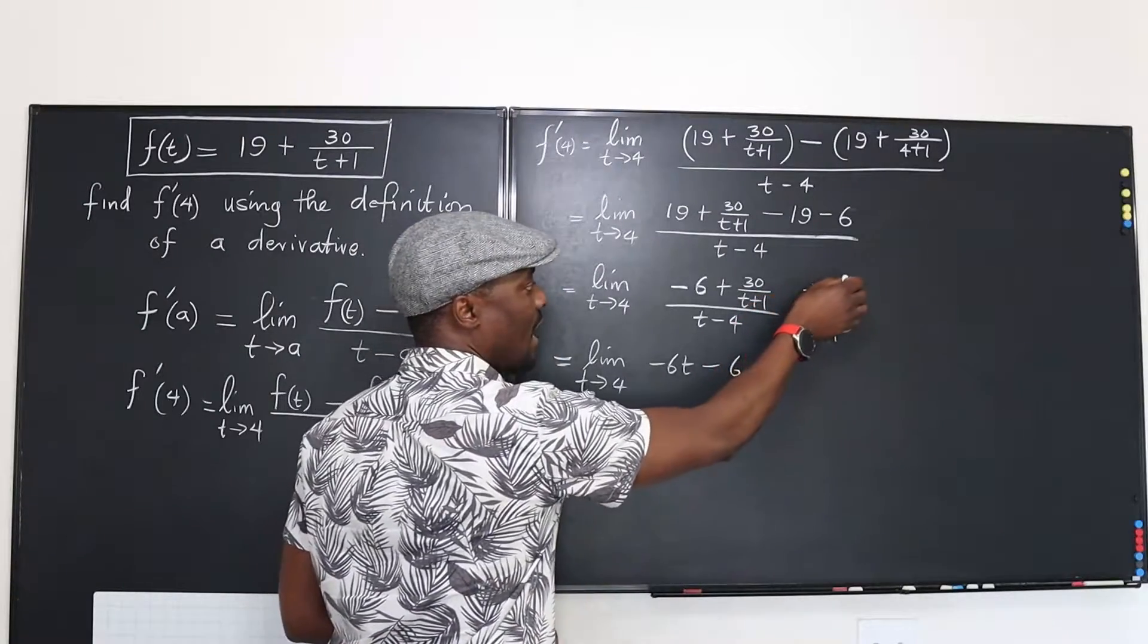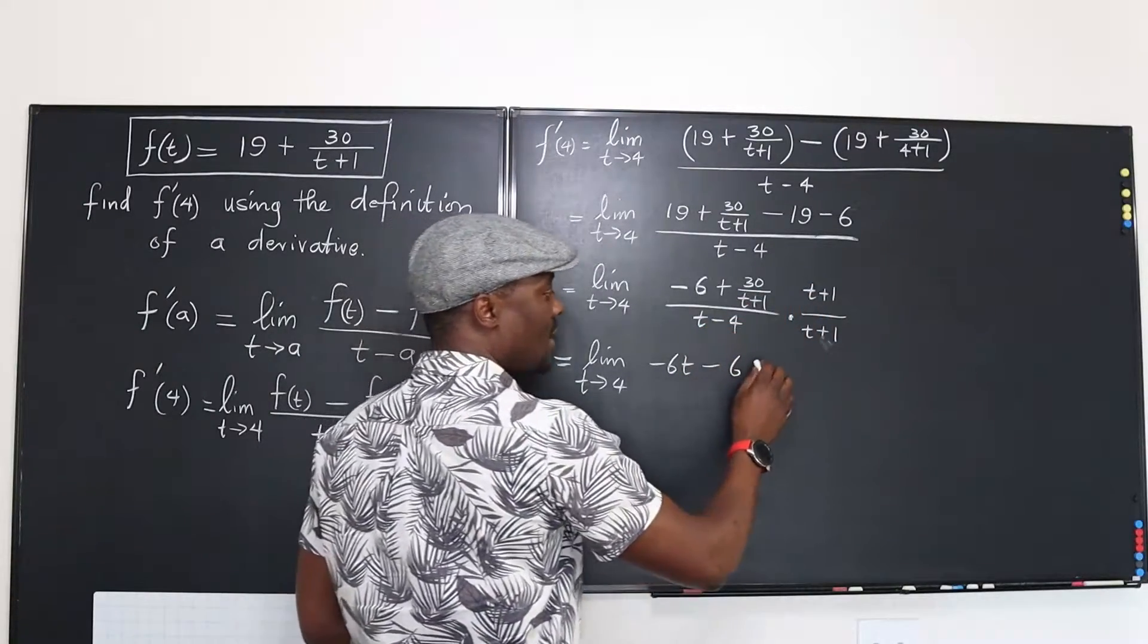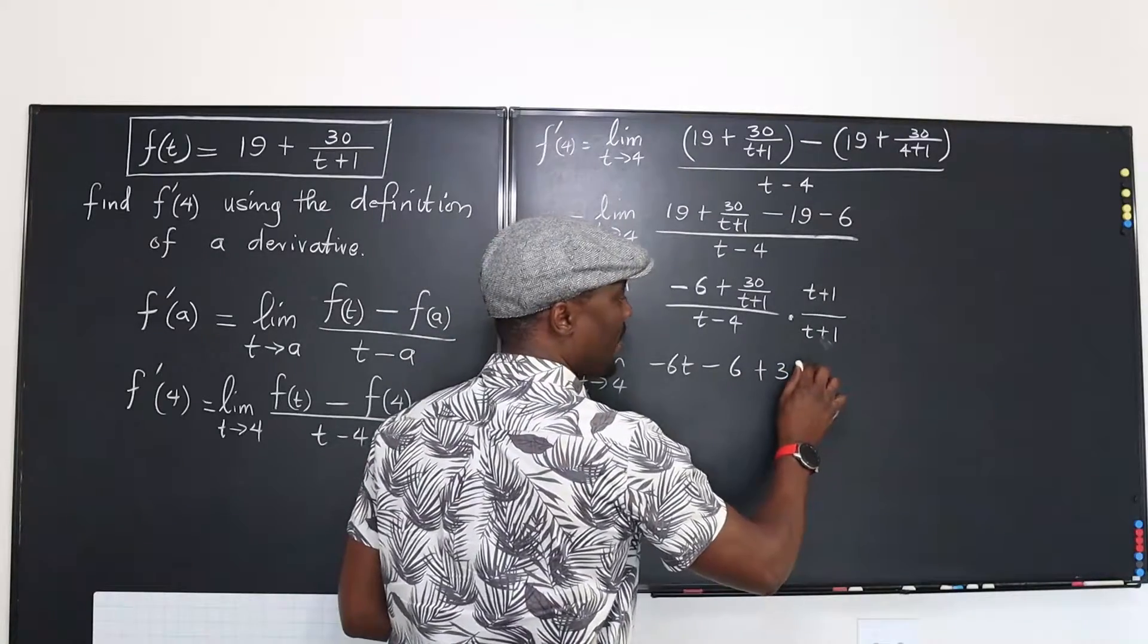Well, this is now going to cancel this out. This is going to take this out and you're going to have plus 30.